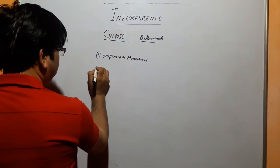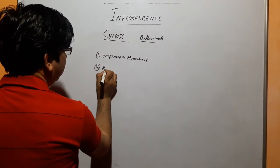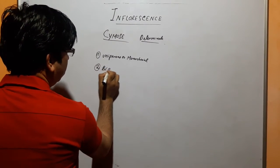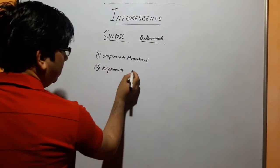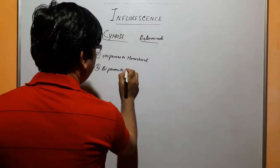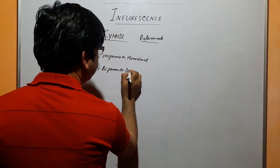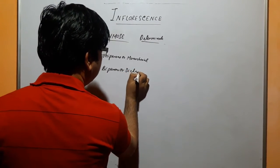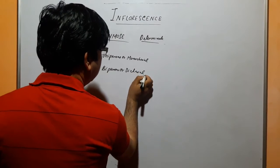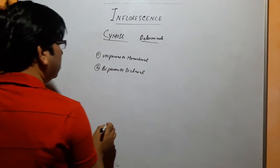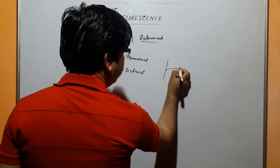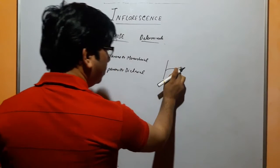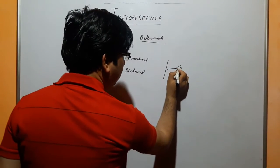The second part is biparous. This is biparous — that is, two branches — and dichasial.